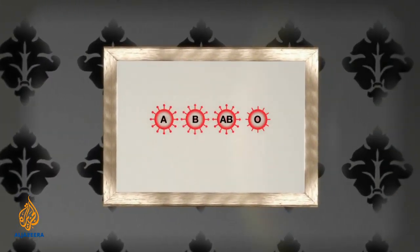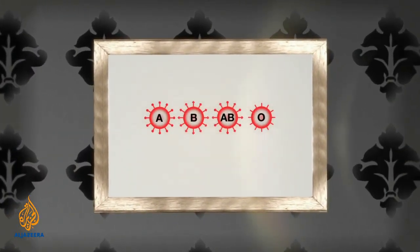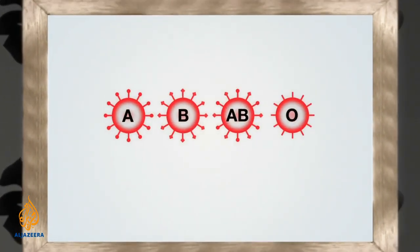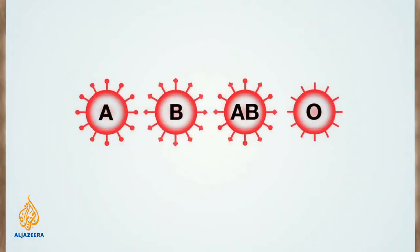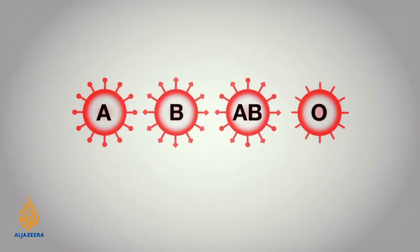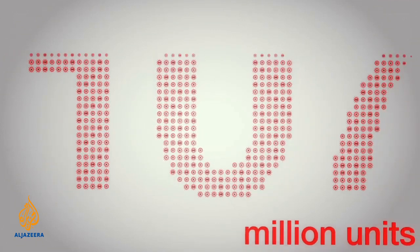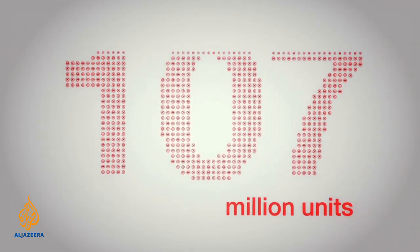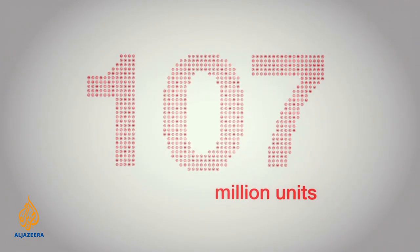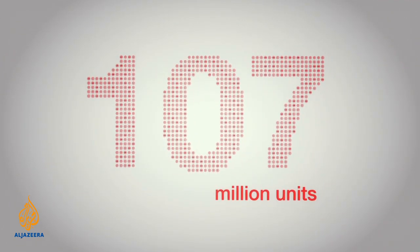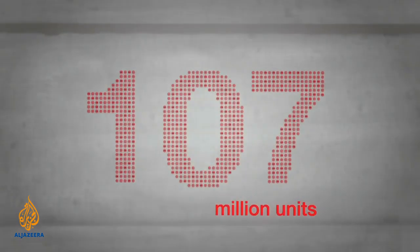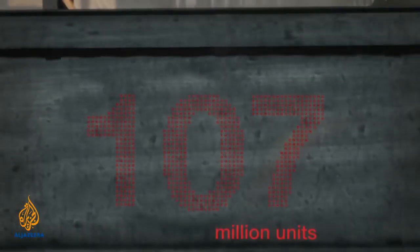In 1902, Landsteiner classified human blood into the now well-known A, B, AB, and O groups, allowing safe blood transfusion on a mass scale. Today, around 107 million units of blood donations are collected globally every year, demonstrating the huge impact of Landsteiner's discovery.